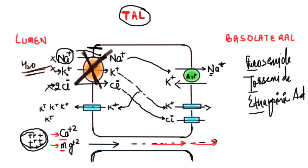Another important point: when we use these loop diuretics, they will also cause the excretion of cations like calcium and magnesium. Because when the pump doesn't work, potassium cannot enter the cell, so potassium cannot diffuse back to create a positive potential, and therefore there will be no reabsorption of calcium and magnesium. So along with diuresis, loop diuretics also cause the loss of calcium and magnesium.